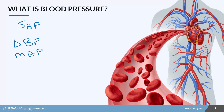Systolic blood pressure is the pressure exerted in the vessels when the heart contracts. It contracts, forces blood out into the arteries, and there is a pressure within those arteries during that time.